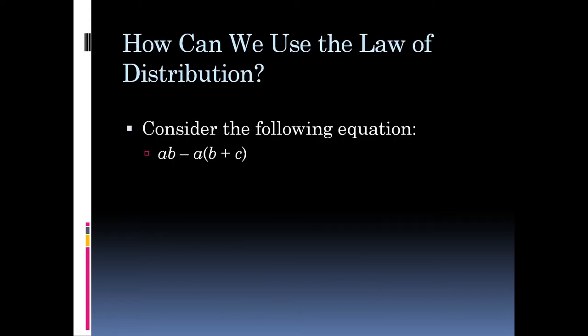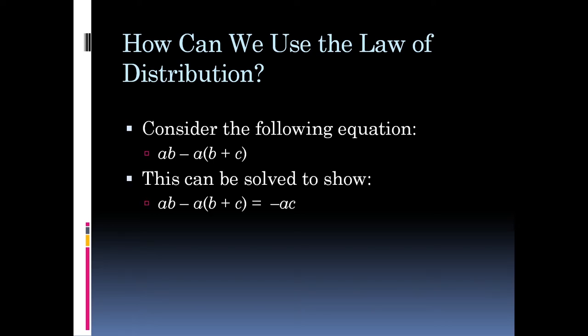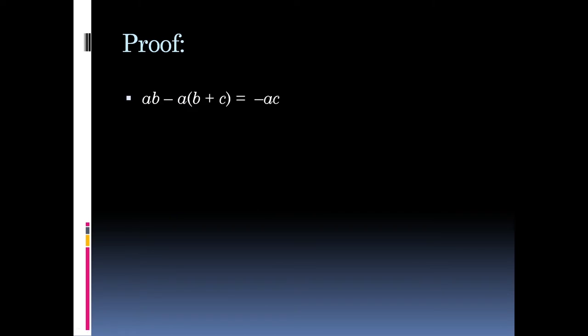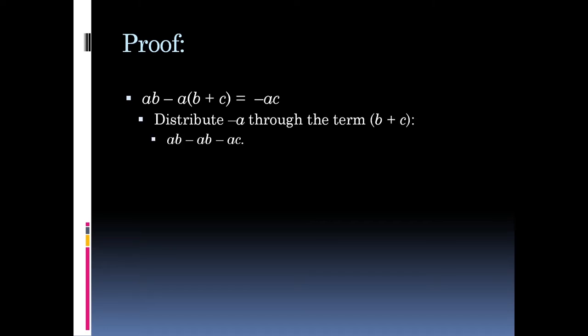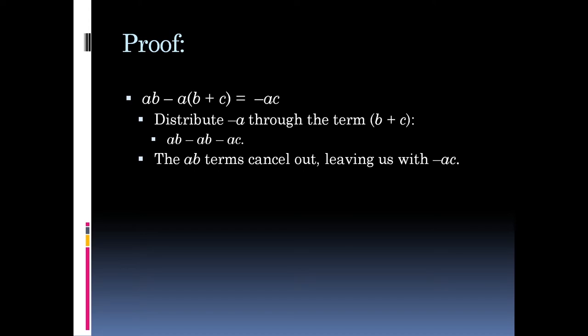Consider the equation: ab minus a parentheses b plus c in parentheses. Using only PEMDAS, there's nothing else you can do. But applying distribution, this can be shown to equal negative ac. Here's the proof: distribute negative a through b plus c, giving ab minus ab minus ac. The ab terms cancel out, leaving negative ac.